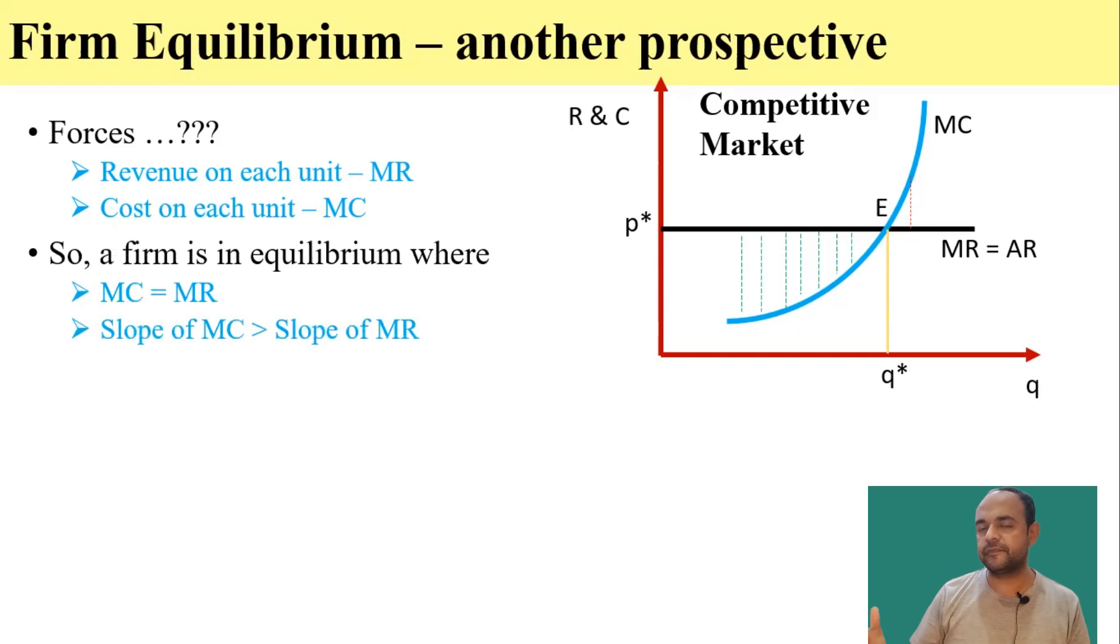So producing any unit after that will have a higher marginal cost and lower marginal revenue. That is why it will not further increase the profit.